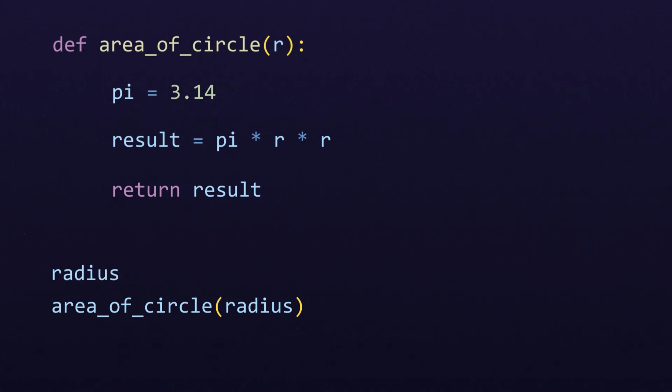Let's call it with a radius of 5 as the input. Now, when the function is called, execution jumps back to the function definition. A new variable that's only available inside the function, called pi, is created with a value of 3.14. Next, we save the result of pi times r times r to a new variable called result.